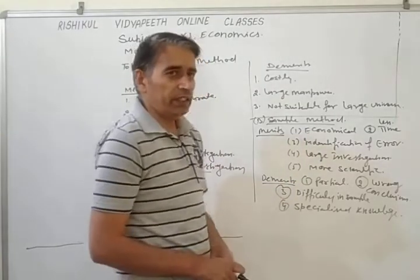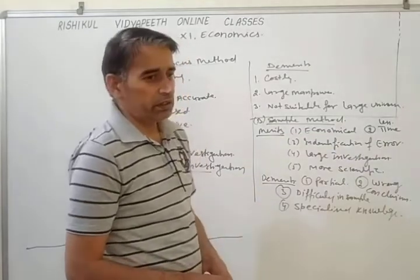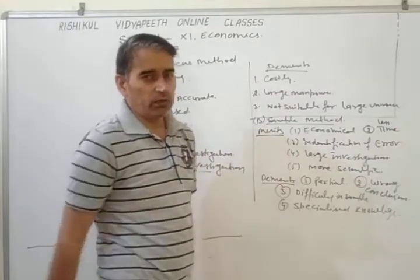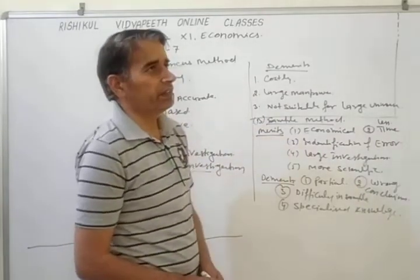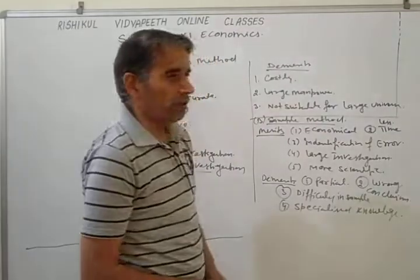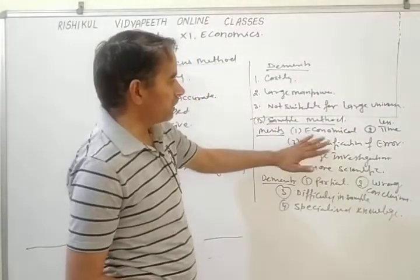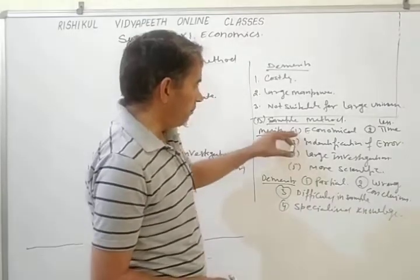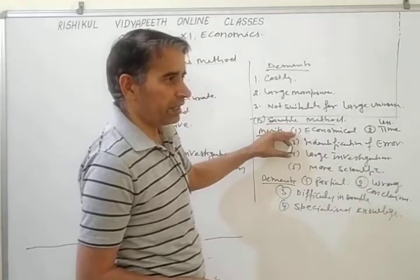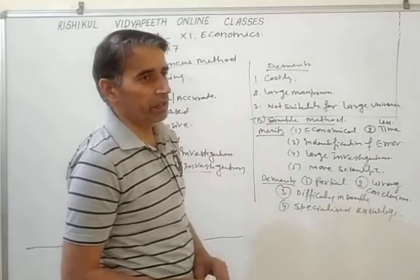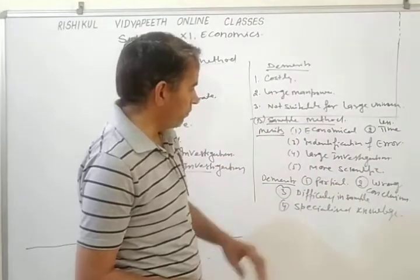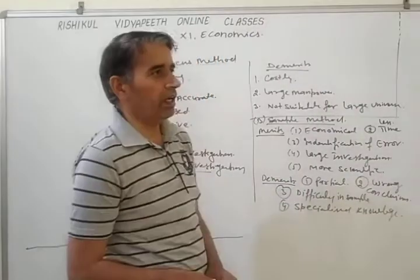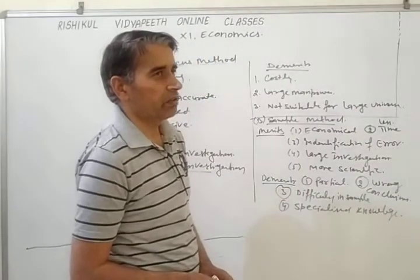Next is identification of errors. Sometimes the entire population cannot be studied easily, but since sample size is small, we can find errors in our counting or analysis more easily. Next is time saving. Because the sample method does not count each and every item, we can study the universe in less time.